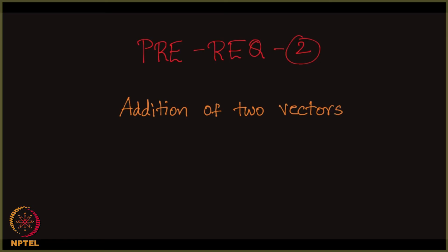It is about addition of two vectors. We have studied the notion of scalars and vectors in our high school days. I am just going to revise that and make some subtle observation about them. What happens when you add two vectors is a very straightforward question.